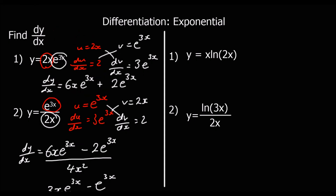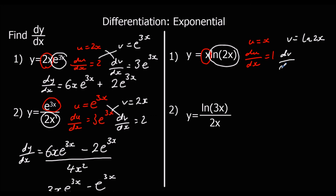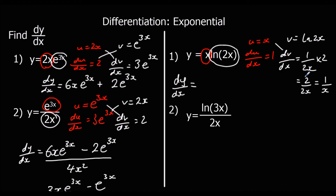The first ln practice question is a product rule. Let u equals x, so du/dx is 1. And v equals ln(2x), so dv/dx is 1 over 2x multiplied by the bracket differentiated, which is 2 — giving 2 over 2x, which simplifies to 1 over x. Substituting into the product rule: u·dv/dx is x times 1/x, which equals 1. Plus v·du/dx: 1 times ln(2x) is ln(2x). So dy/dx equals 1 plus ln(2x).